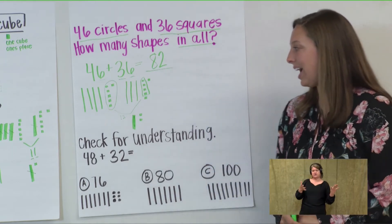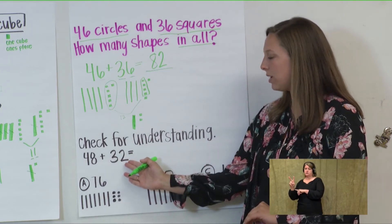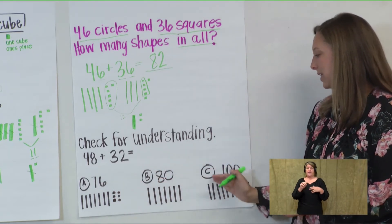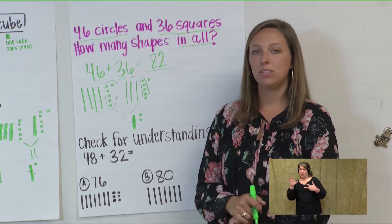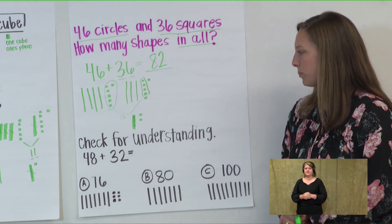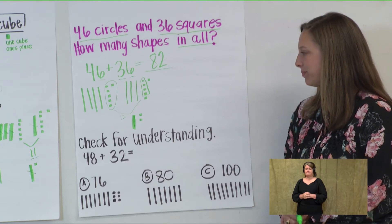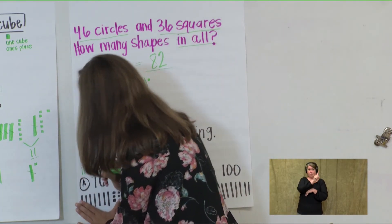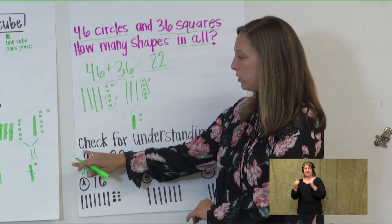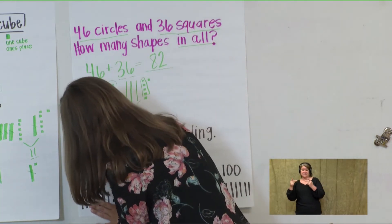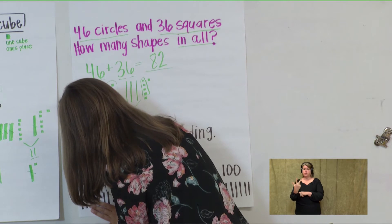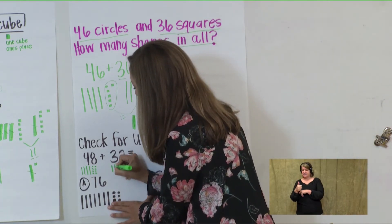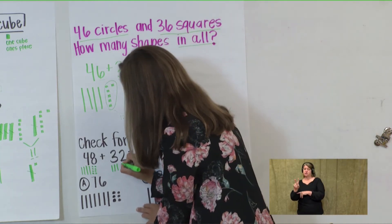Now let's check. I have 48 plus 32. We don't know the sum yet. A says 76, B says 80, and C says 100. Draw it out and see what you get. For 48 you should have four rods — four rods equals 40 to hold the 4 in the tens place — and then eight cubes: 1 through 8. For 32 you should have three tens: 1, 2, 3 — and two ones: 1, 2.